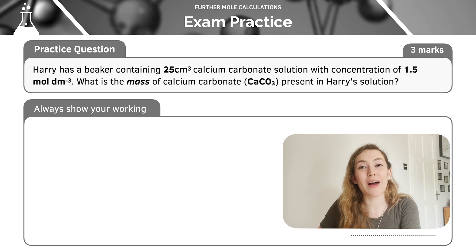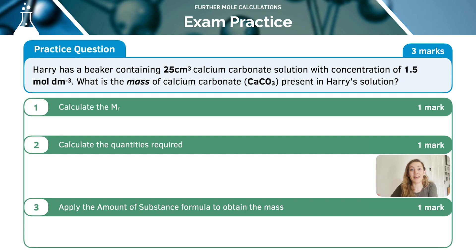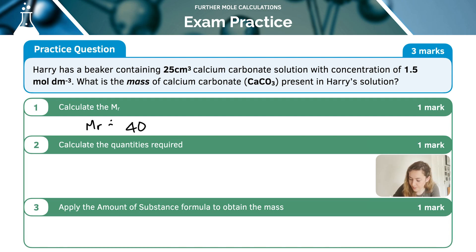Here is a question — pause the video and give it a go yourself. First, I need to calculate the MR, the relative molecular mass of the compound. The MR of calcium carbonate is 40 from calcium, plus 12 from carbon, plus three times 16 from the three oxygens. So that is 100 — a nice whole number.